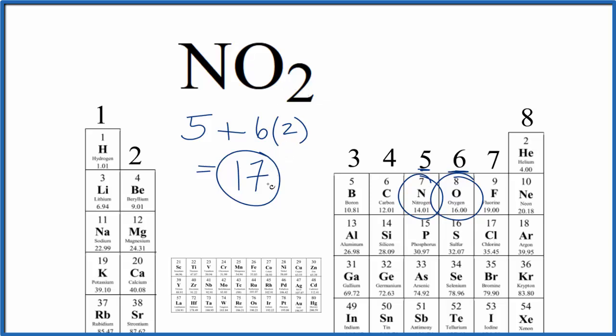Which is kind of strange, we don't often get odd numbers of valence electrons, but this is the correct number for NO2. If we were writing the Lewis structure for NO2, we would distribute these valence electrons around the nitrogen and oxygen atoms the best we could. If you need help with the NO2 Lewis structure, there's a link in the description.